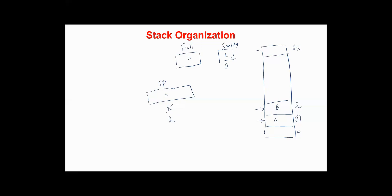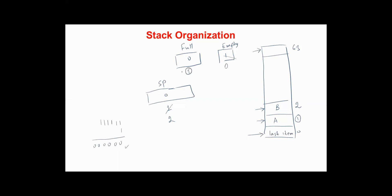If we continue pushing after location six-ones, we increment the stack pointer by one, so we'll have all zeros, and the last item pushed is pushed into location zero. In this case we should set the FULL flag to one, meaning that the stack is full and we cannot push any more items.